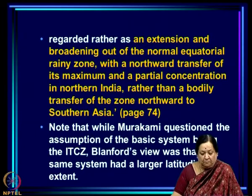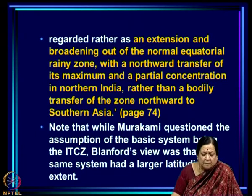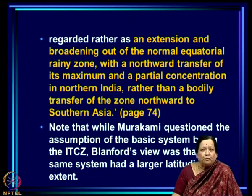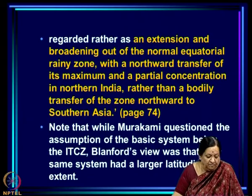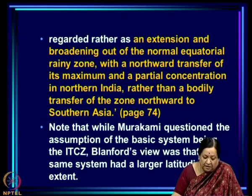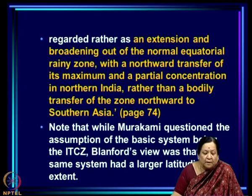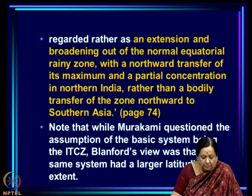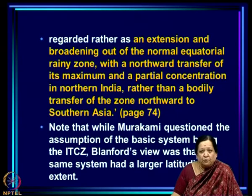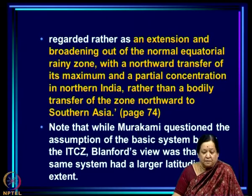Blanford stated that during the monsoon, the whole region between the equator and the Himalayas may be regarded as an extension and broadening out of the normal equatorial rainy zone, with a northward transfer of its maximum and a partial concentration in north India, rather than a bodily transfer of the zone northward to southern Asia. This turns out to be a very perceptive remark, borne out by later studies. So there is a difference between Murakami's approach and what Blanford said.